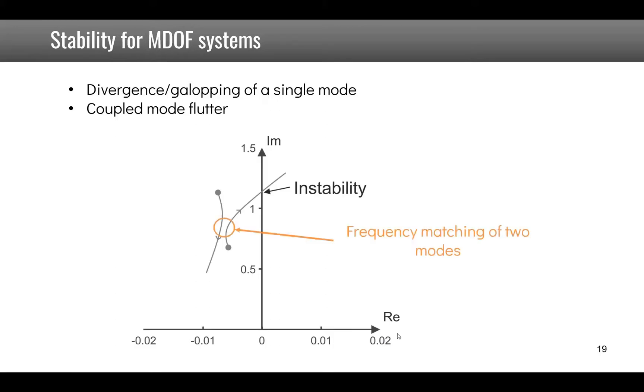Now for multiple degree of freedom system different instabilities can occur. Of course you can have divergence and galloping of a single mode but you can also have coupled mode effect which is called a coupled mode flutter.